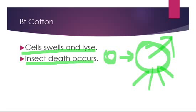Ultimately insect ki bhi death ho jayegi because it has lysed all the cells of the gut. Gut is very important for each and everything in physiology — gut is the main part. So obviously jab gut ka koi bhi cell nahi bacheega, then the insect will ultimately die. This is the particular mechanism by which a particular insect is killed by the effect of BT toxin.